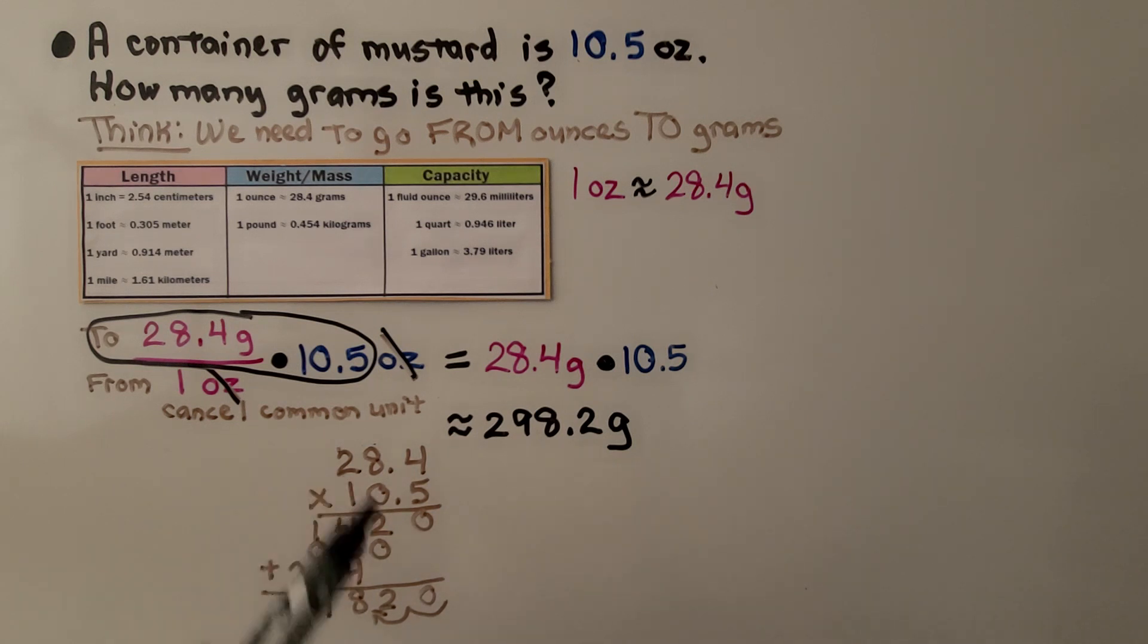We have 1, 2 jumps in the equation, so we're going to have 1, 2 jumps in our product. We get approximately 298.2 grams.